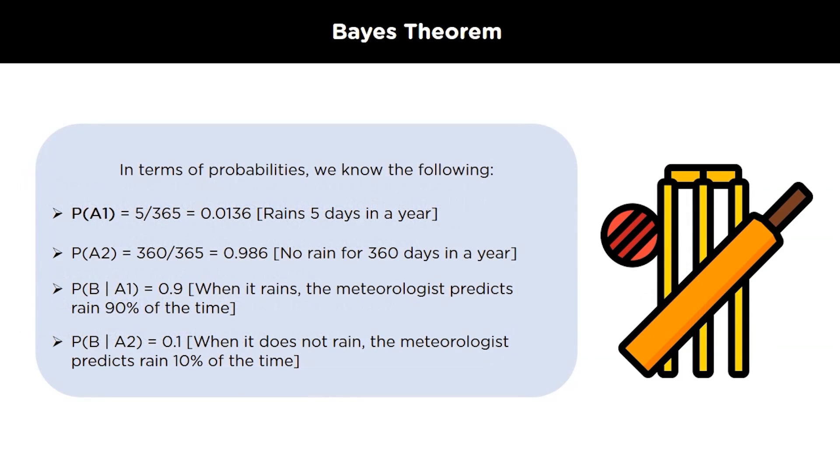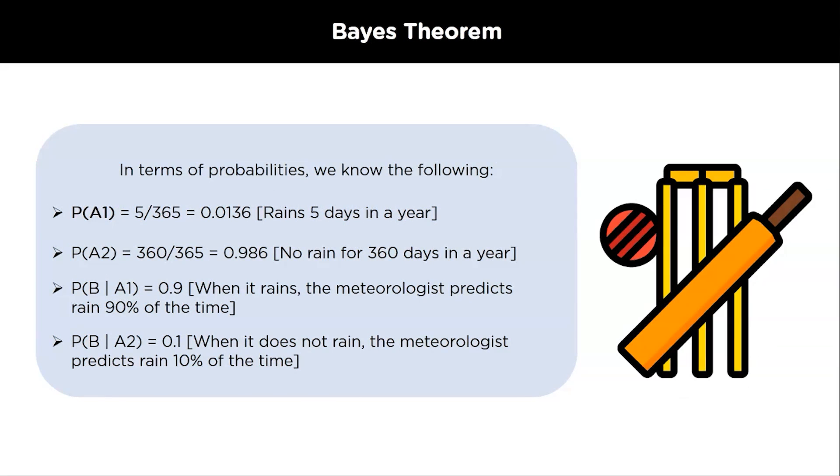Now, in terms of probability, we know the following. Probability of A1 is 5 by 365 that it rains 5 days in a year which will come out to be 0.0136. P A2 is 360 by 365 that is no days for 360 days in an year which will come out to be 0.986. P B slash A1 is 0.9. This signifies when it rains, the meteorologist predicts the rain 90% of the time. In a similar manner, P B by A2 is 0.1 that it does not rain, the meteorologist predicts the rain 10% of the time.